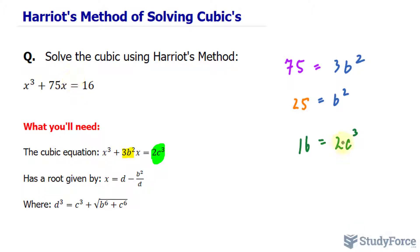So by dividing both sides by 2, I end up with c³, which I can use in this equation. So I'll divide both sides by 2, 16 divided by 2 is 8. Alright, so I have b² and I have c³.